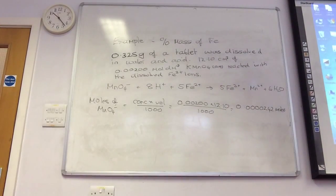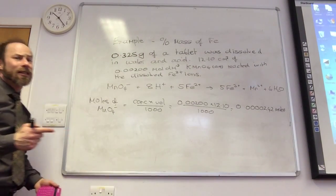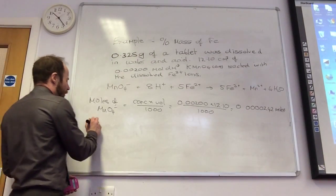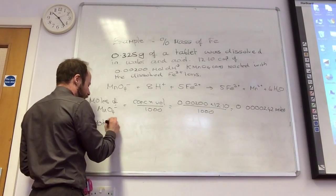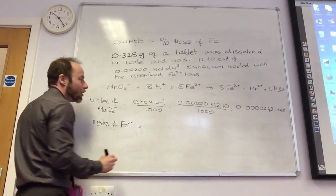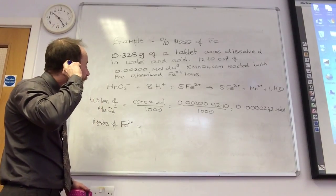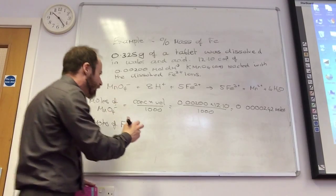I've worked out how many moles of potassium permanganate. What do I need to relate this to? Moles of Fe2+ times, right. How do I do that? Look at the equation. Times by 5. Times by 5, thank you.